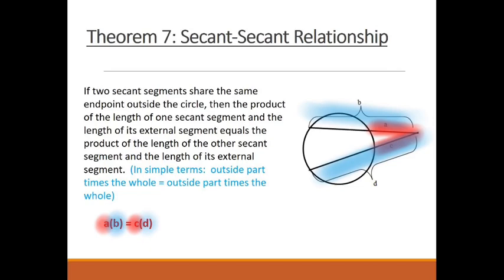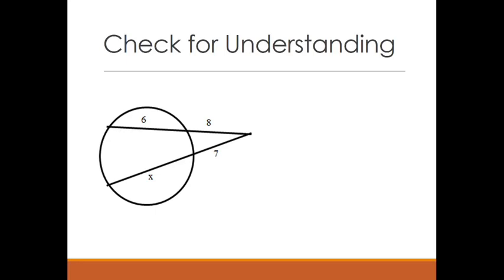But we are going to do an example to practice it. So here's our check for understanding problem. We have two secants. Let's apply that theorem we just learned. So maybe pause the video, give it a try, and then hit play when you're ready to practice it. I'm going to start with a misconception, what people are probably going to do by mistake. Many people are going to try to do 8 times 6 equals 7 times X. That is not a true relationship. You're doing outside part times inside part instead of doing the outside part times the whole thing.